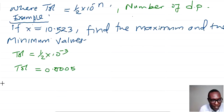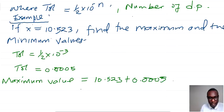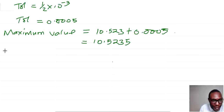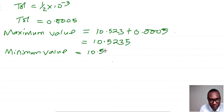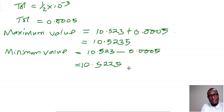Now we need to get the maximum value. Maximum value becomes 10.523 plus the tolerance, which is 0.0005. For the minimum value, we have 10.523 minus the tolerance, which is 0.0005, giving us 10.5225. So this is the maximum and this is the minimum value.